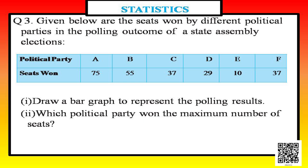Next is question number three of exercise 14.3. The question is: given below are the seats won by different political parties in the polling outcome of a state assembly election, with numbers given in tabular form. At the end it asks: draw a bar graph to represent the polling results, and which political party won the maximum number of seats.